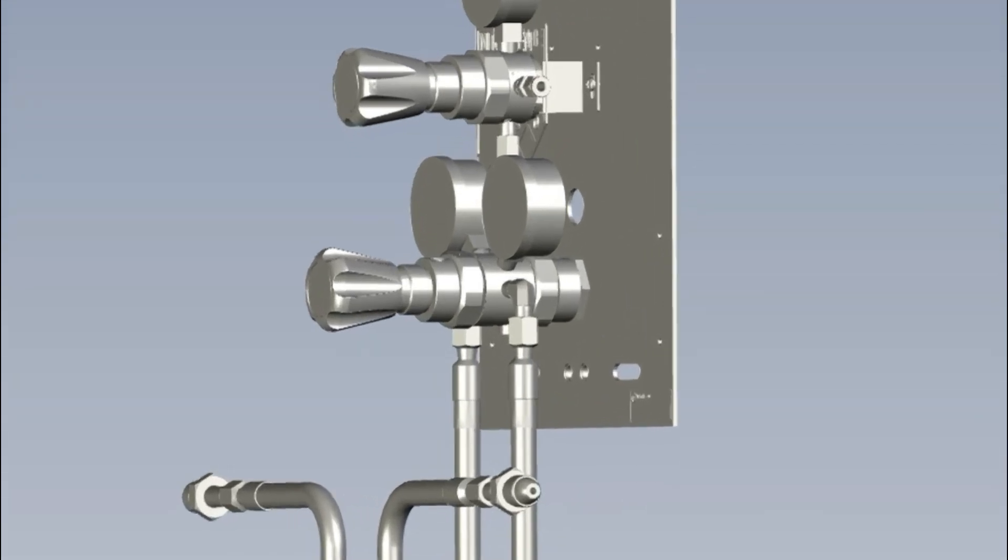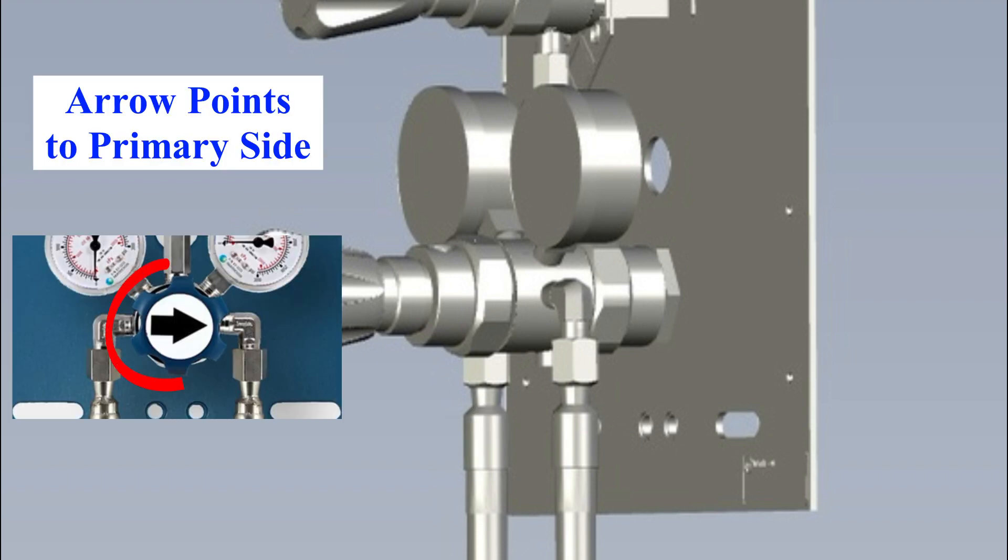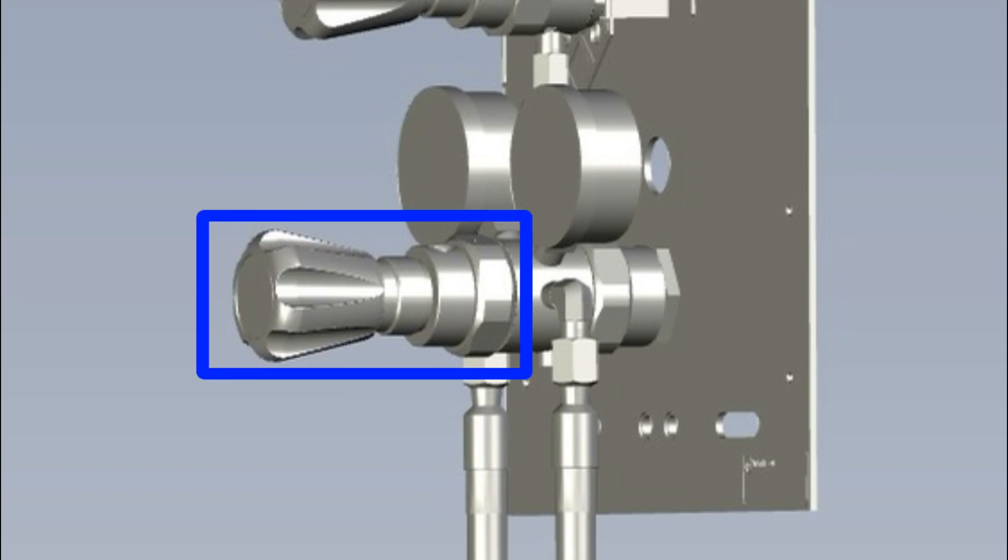The switchover regulator is actually two pressure regulators in a single body. The back regulator is preset and is for the gas source on the left side. The arrow knob is the pressure adjustment for the front pressure regulator.